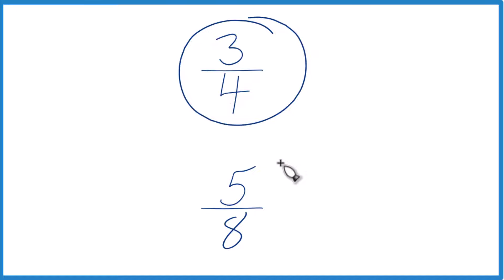So the first thing we could do is divide three by four in a calculator, five by eight on a calculator, get decimals and just compare those. See if three-fourths is greater than, less than, or equal to five-eighths.